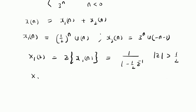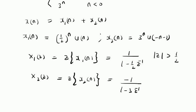Next, we evaluate the Z-transform of the second component X2 of n, which is 3^n u of minus n minus 1. This is an anti-causal signal. The general Z-transform pair is: minus alpha^n u(minus n minus 1) transforms to 1 over (1 minus alpha Z inverse). Here alpha is 3, but since we do not have a minus sign, it becomes minus 1 over (1 minus 3 Z inverse), with corresponding ROC |z| less than 3, that is, inside a circle of radius 3.